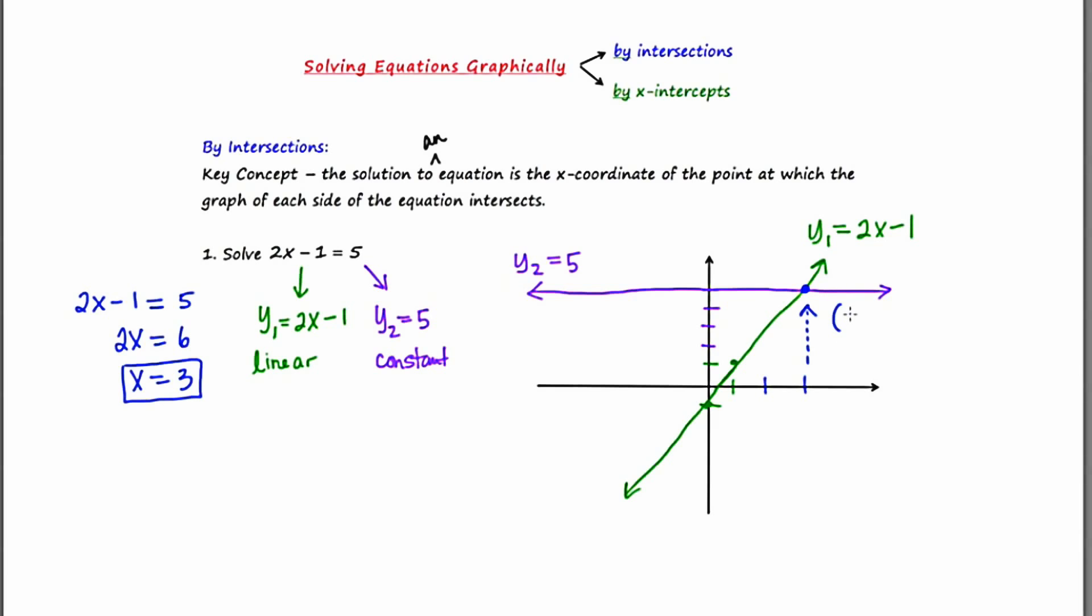The point of intersection would be 3, 5. And what you want to focus on is not the whole ordered pair, but just the x value. This guy right here reveals the answer.